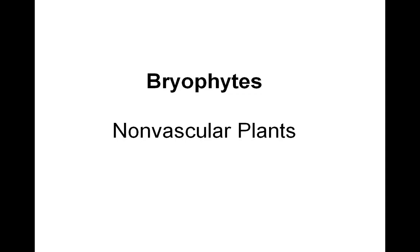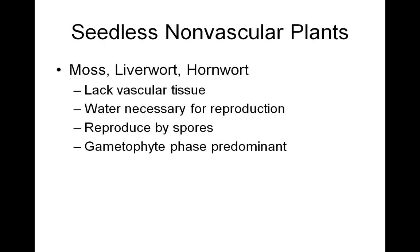Bryophytes were the first land plants to evolve. Now we take a look at the non-vascular plants — seedless, non-vascular plants. Examples of these would be mosses, liverworts, and hornworts. These lack vascular tissue and require water for reproduction. Therefore, sperm must have a thin film of water to be transported to the egg for fertilization. These plants reproduce by spores, so they do not produce seeds. In the bryophytes, the gametophyte is the predominant stage.